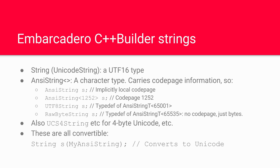In C++Builder, we have a few other string types. The main one is String, which is a typedef of UnicodeString — it's a UTF-16 type. There's also ANSIString, which is a single character type that carries code page information, as you can see in some code samples on screen. ANSIString S is just implicitly the local code page, but you can also have a templated version, for example code page 1252. Or you can use UTF8String, which is actually a typedef meaning the narrow characters it contains are actually a UTF-8 encoded string. And you can even say that something contains just raw bytes.